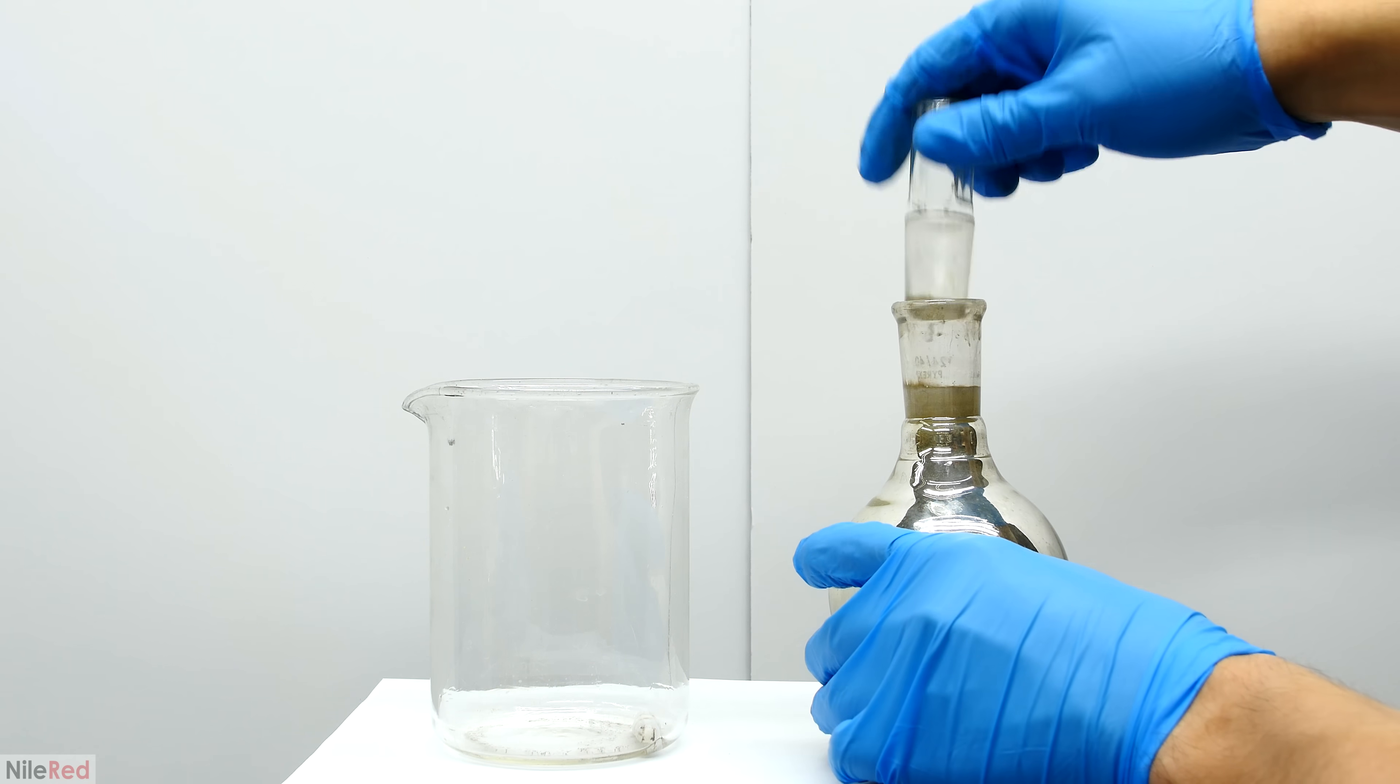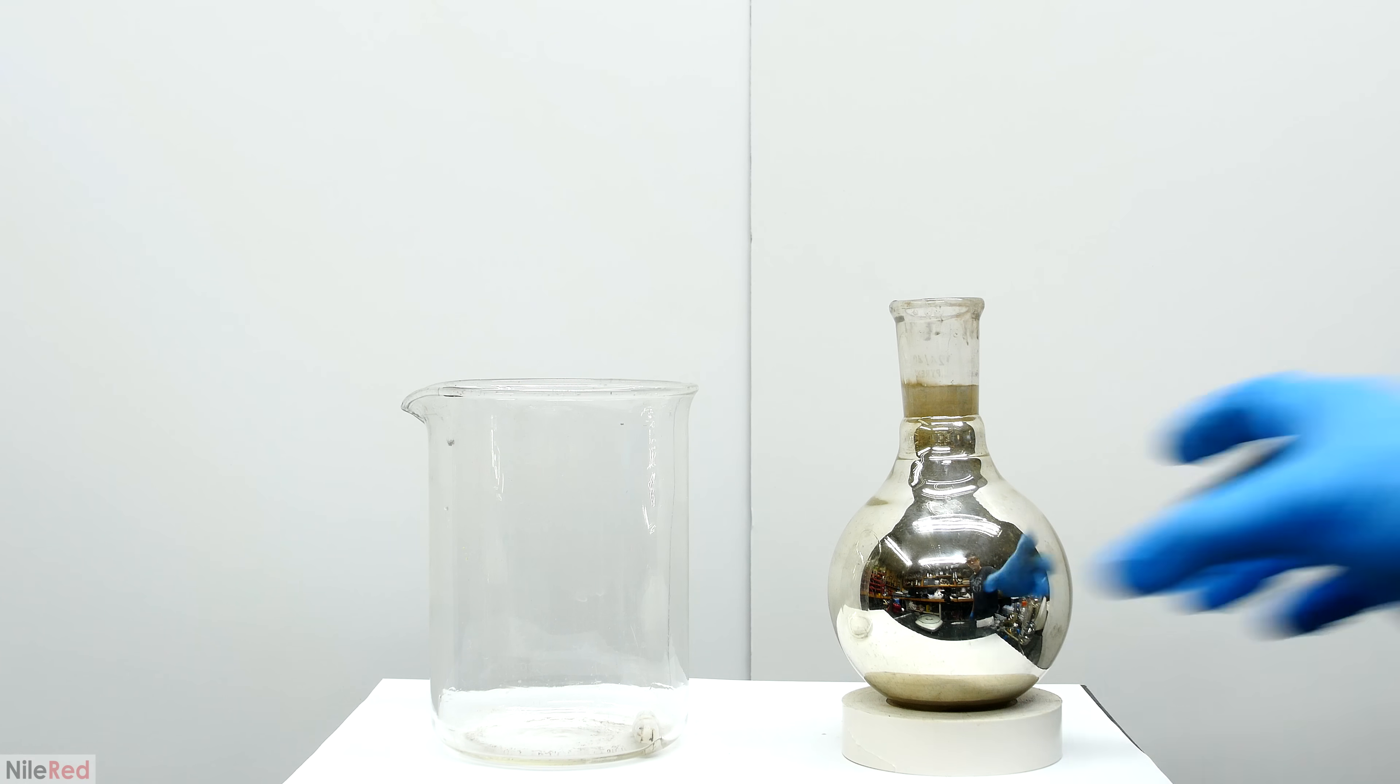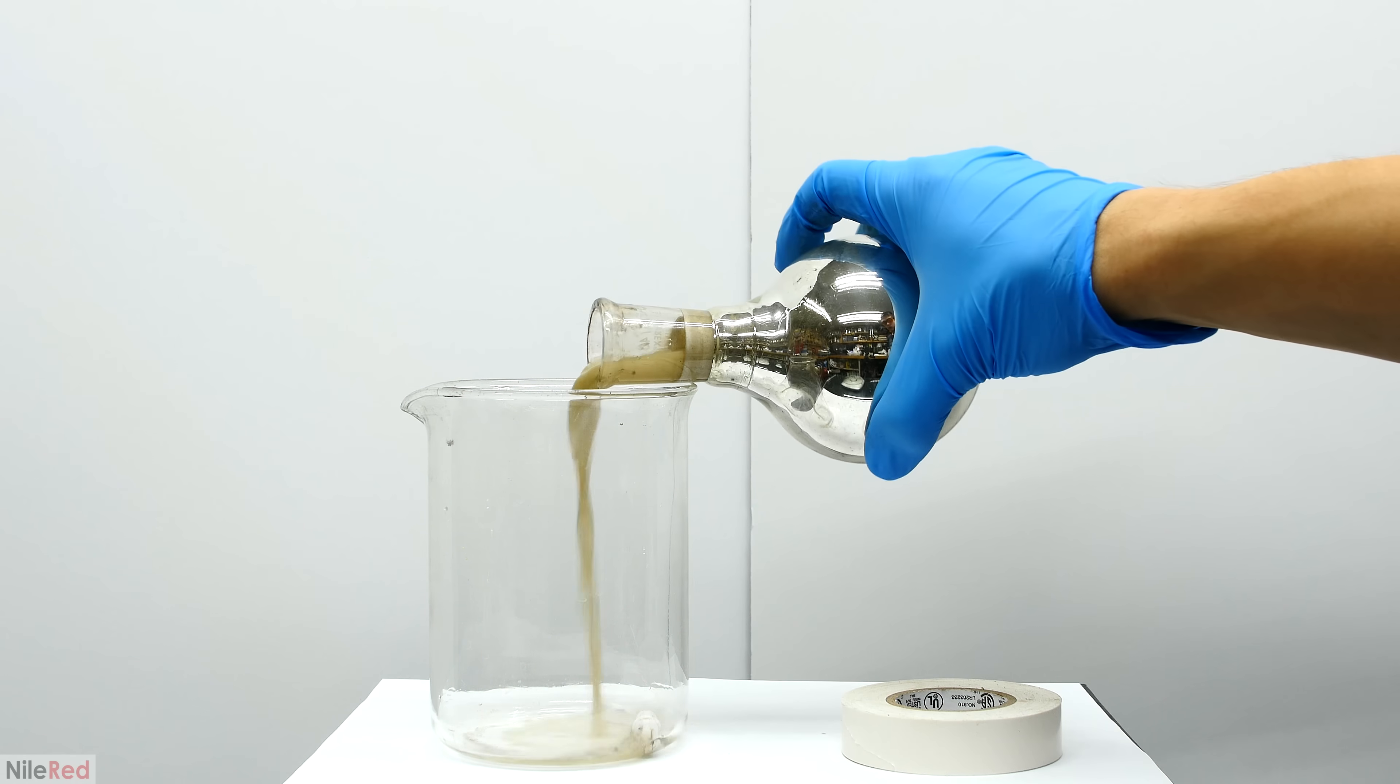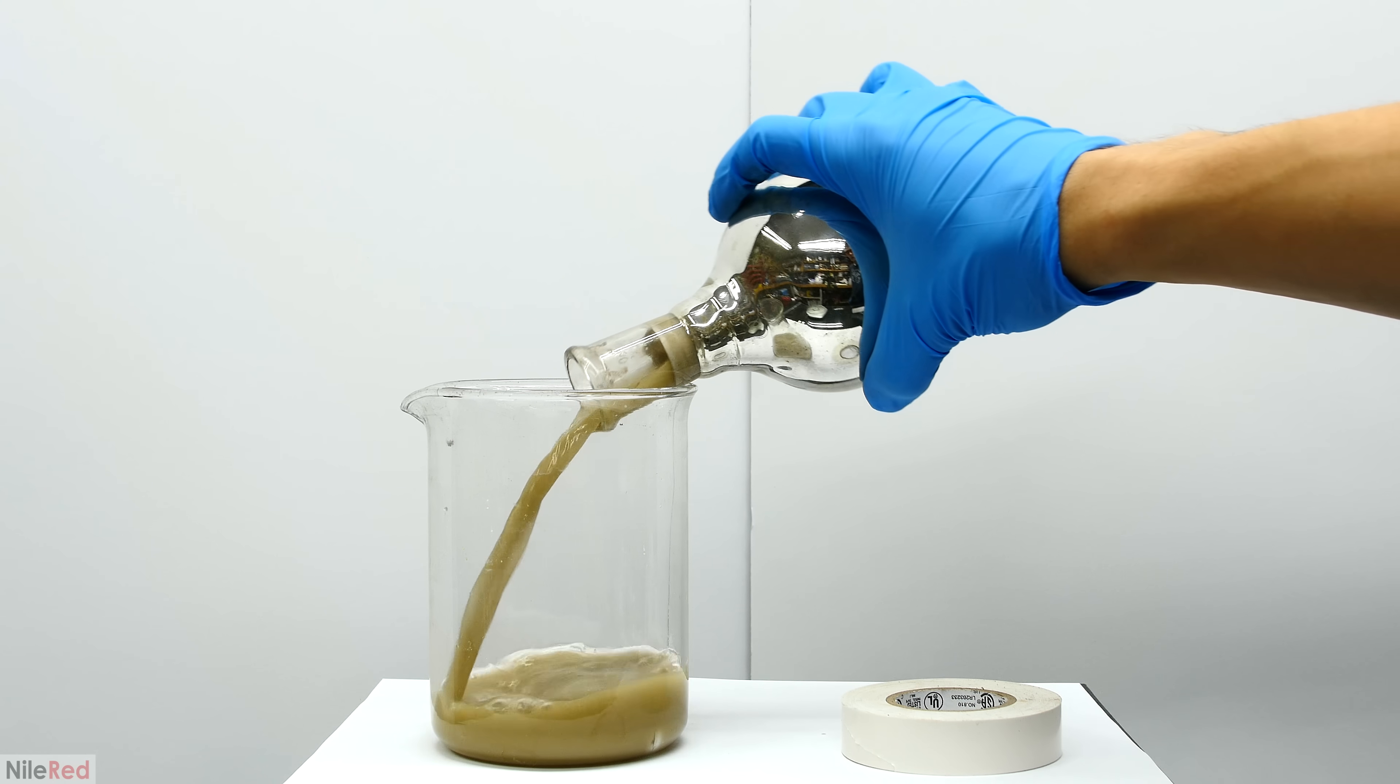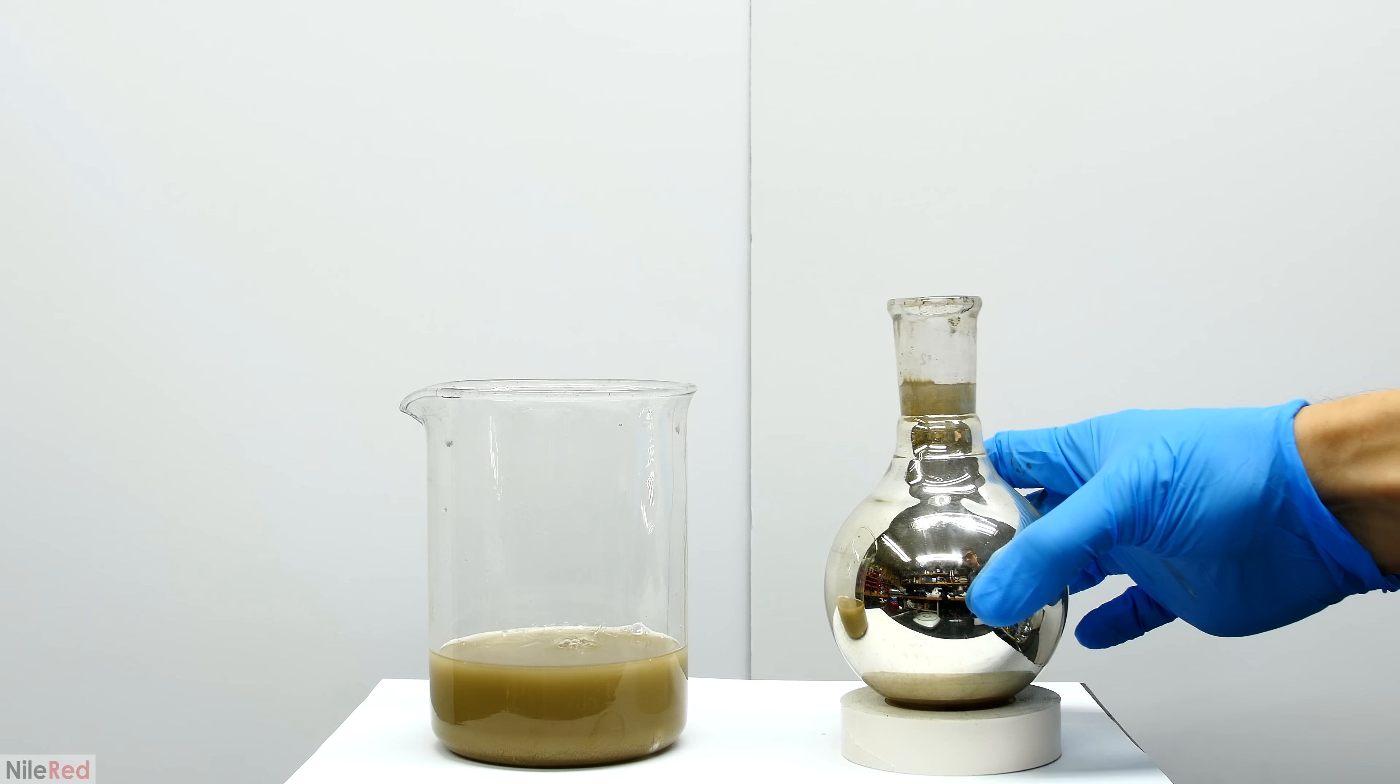Once I was satisfied with the mirror, I could dump out the contents of the flask. The waste here contains a little bit of silver which can be recycled. It would only be something like a dollar or two worth of silver, so I don't really think it's worth the time.